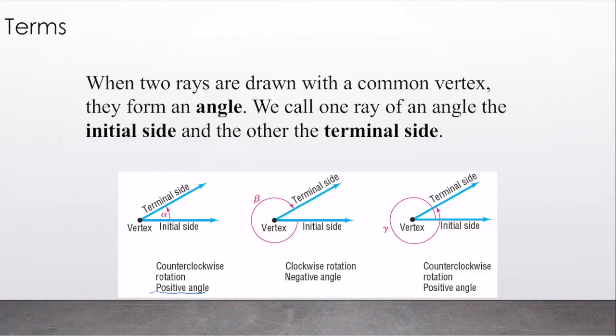Here I have a negative angle. We took the initial side and went clockwise. That would give us a negative angle. And here we have a positive angle, but it is greater than 360 degrees. One full rotation is 360 degrees.